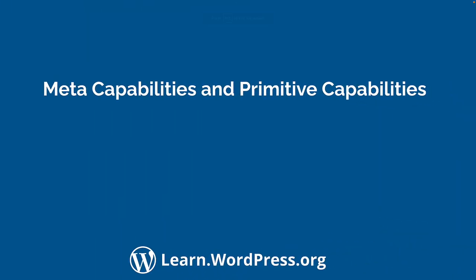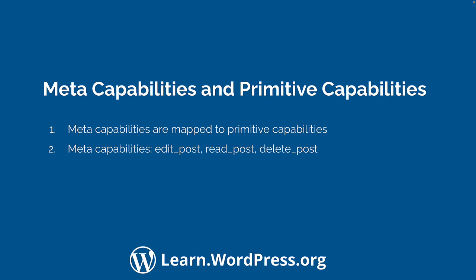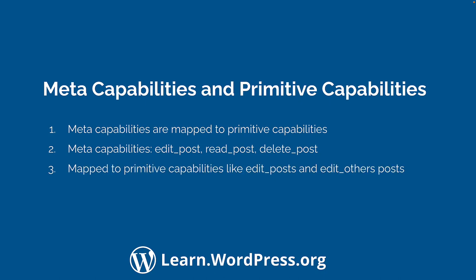Now would be a good time to talk about the different types of capabilities. There are three types of capabilities available to custom post types. Meta-capabilities are capabilities that are mapped to primitive capabilities. The three meta-capabilities are edit_post, read_post, and delete_post. As an example, the edit_post meta-capability is mapped to primitive capabilities like edit_posts and edit_others_posts. Because the meta-capabilities are automatically mapped to certain primitive capabilities, it's generally recommended not to grant the meta-capabilities directly to users or roles, and rather to grant any of the primitive capabilities.